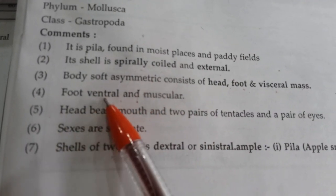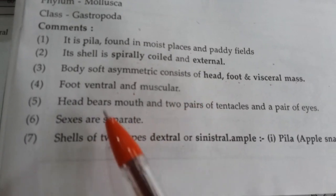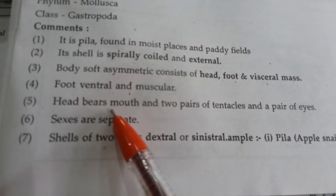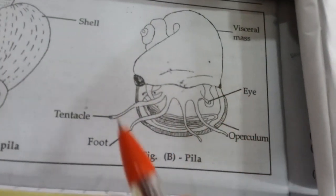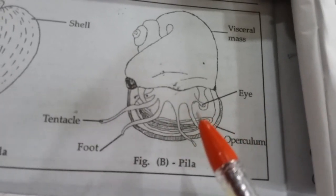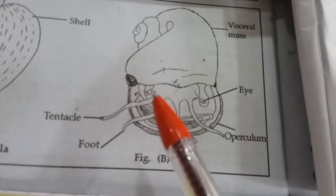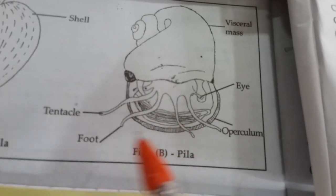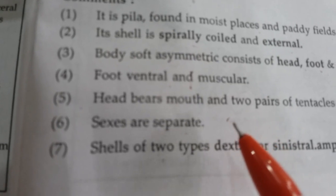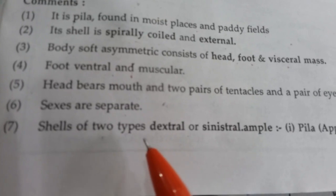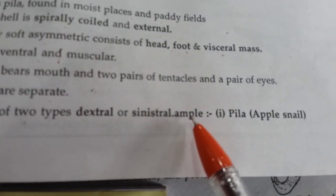Its foot is ventral and vascular, present at the ventral side. The head bears the mouth and two pairs of tentacles and pairs of eyes. You can see here — this is the head; it bears a pair of eyes and one pair of tentacles. The sexes are separate in Pyla — female and male bodies are not identical, they are separate. The shell is of two types: dextral and sinistral.